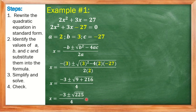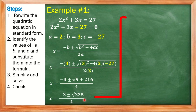Next, we find the square root of 225. Think of a number that when multiplied by itself gives 225 — that is positive and negative 15, since 15 times 15 is 225. So we have negative 3, plus or minus 15, all over 4. Copy the denominator 4.